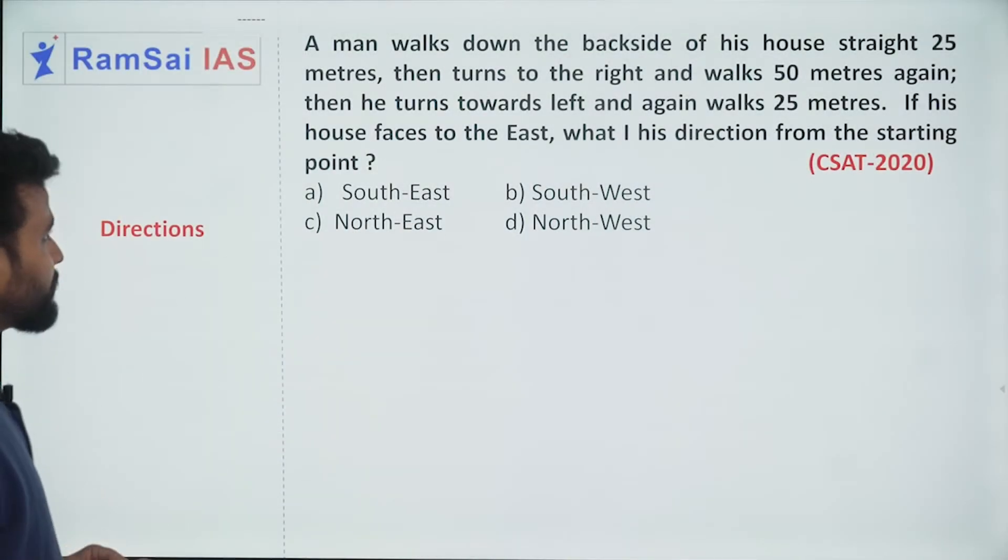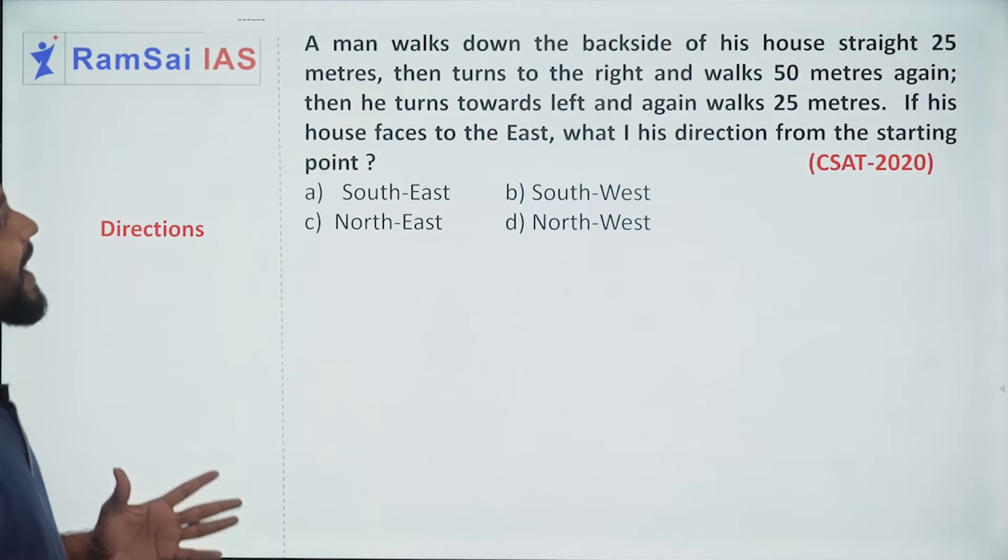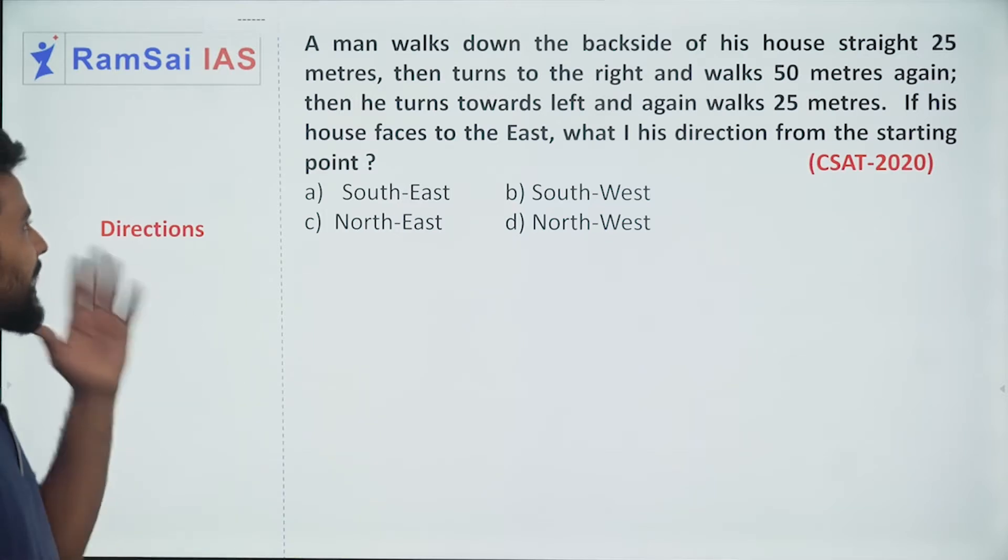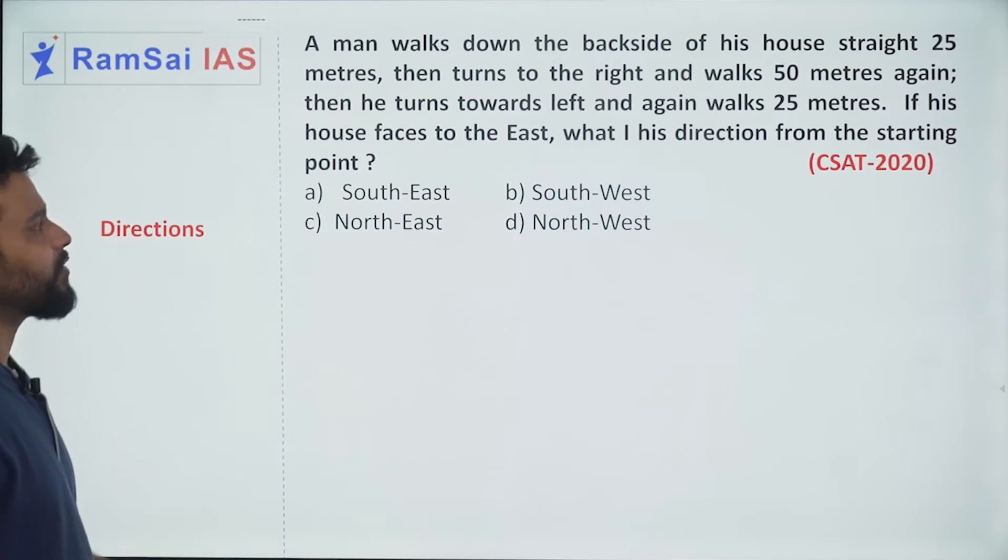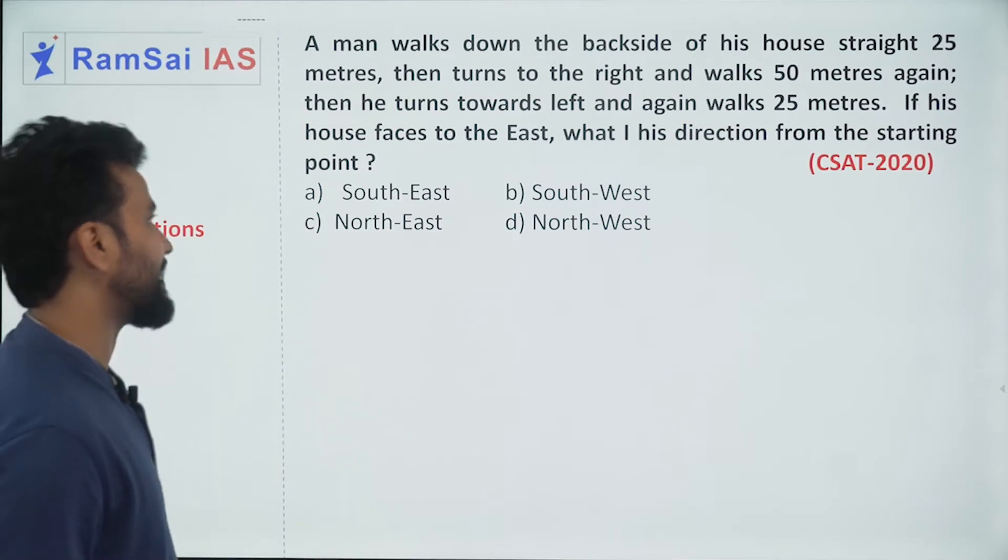CSAT 2020 is a directions question. A man walks down the back side of his house straight 25 meters,